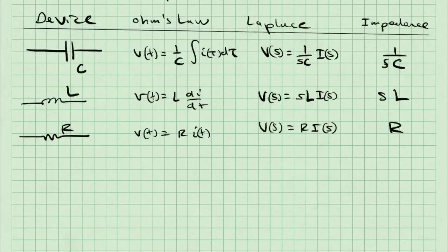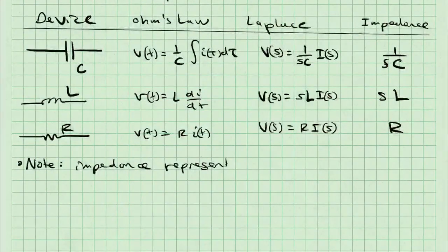It turns out that these impedances look just the same as in phasor form, if you're familiar with phasors, except that I've replaced J omega with S. I also want to note that this impedance represents the transfer function V of S over I of S for each of these devices.